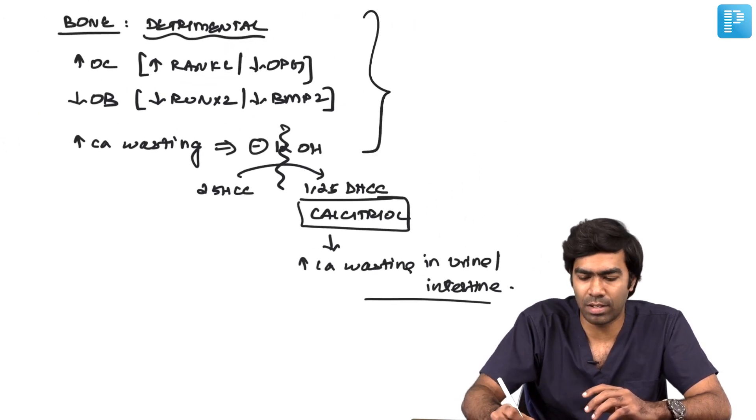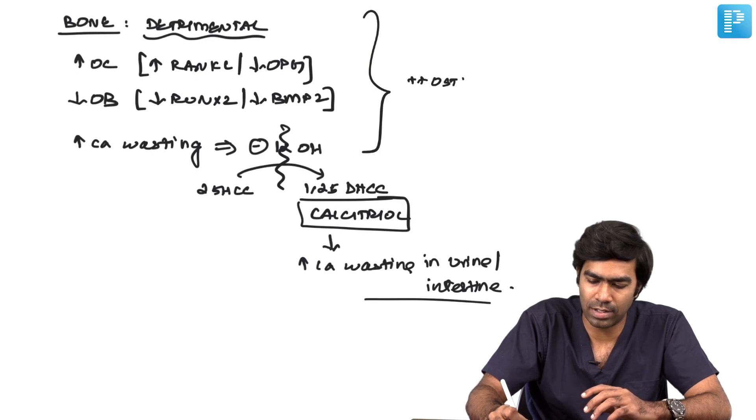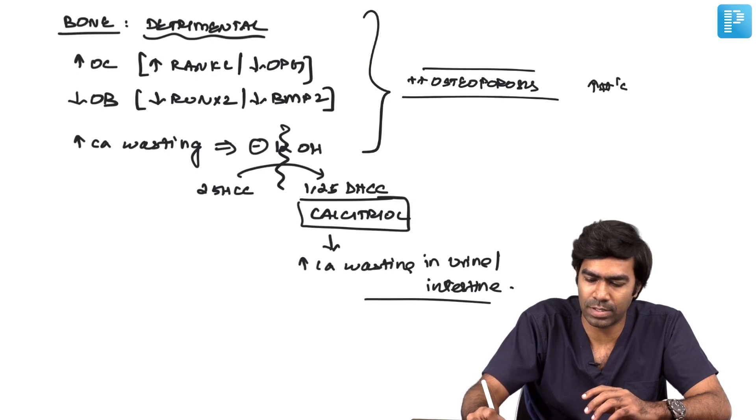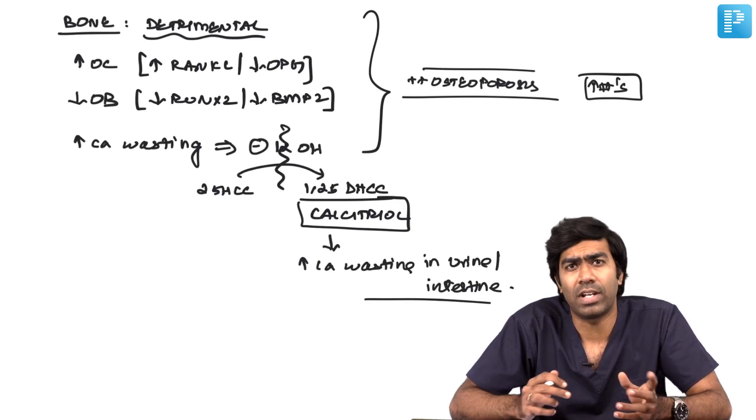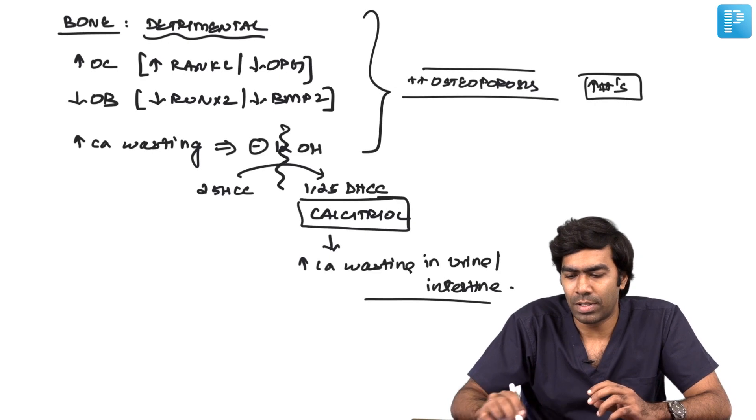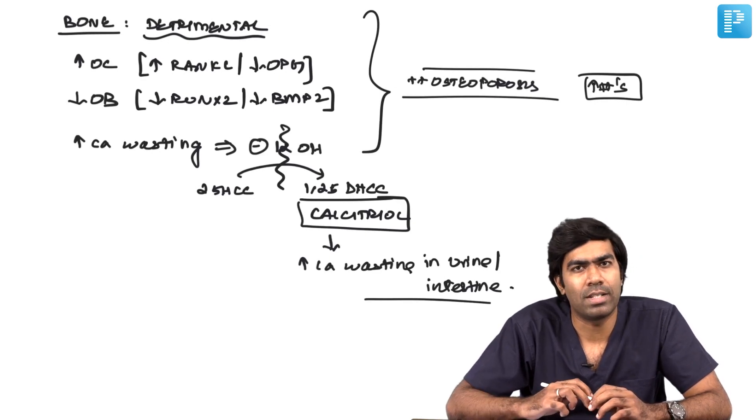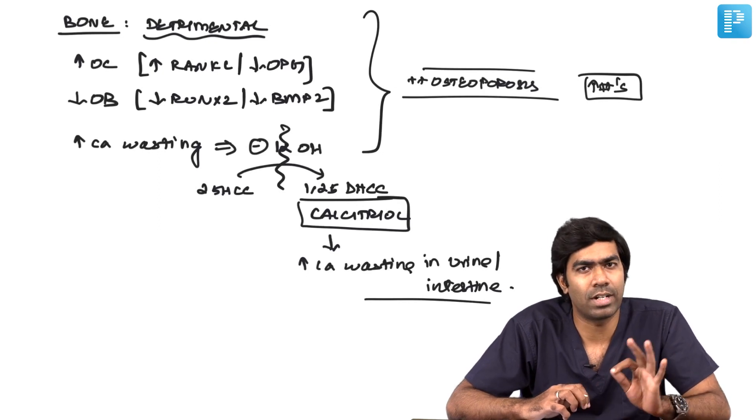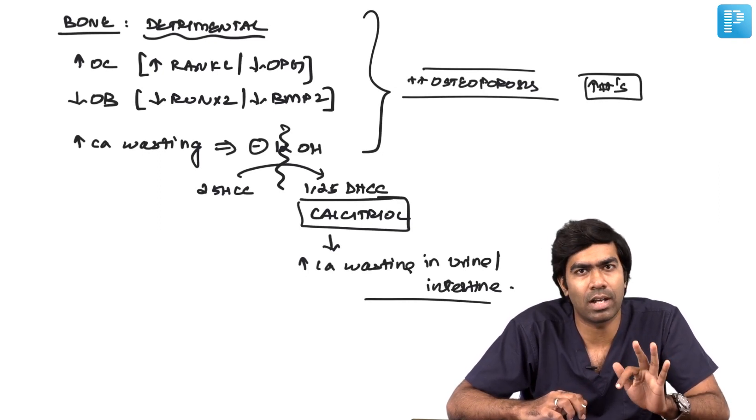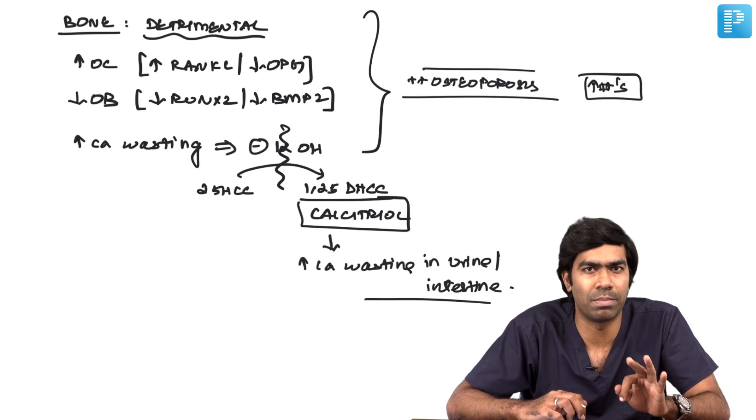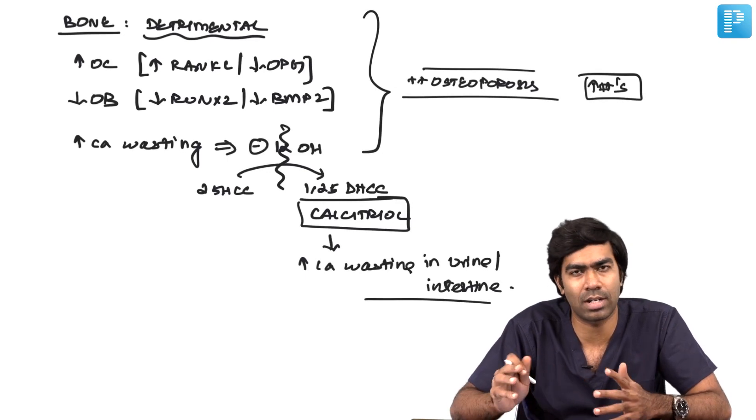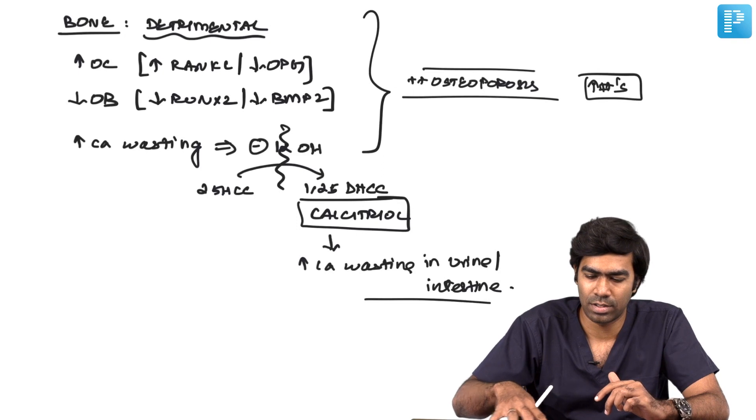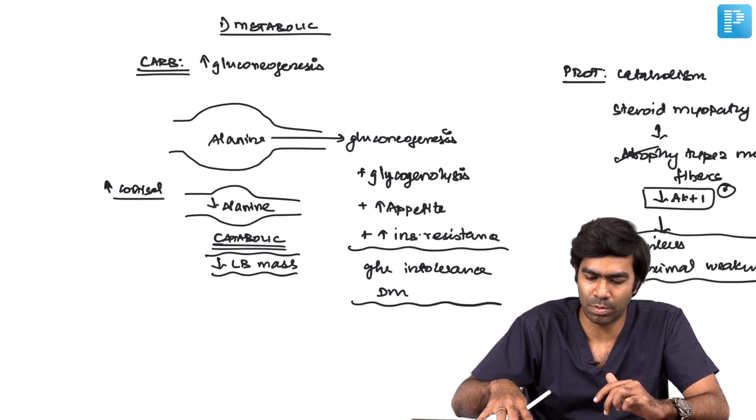The net effect is that they promote bone loss and trigger osteoporosis, which increases the risk of fractures, especially in patients receiving long-term glucocorticoid therapy. Whenever glucocorticoid therapy is anticipated to exceed three months duration, you must add calcium, vitamin D, and prophylactic bone protective therapy like bisphosphonates in advance.